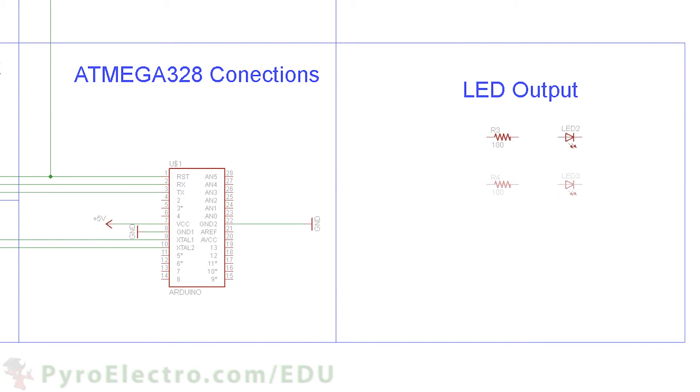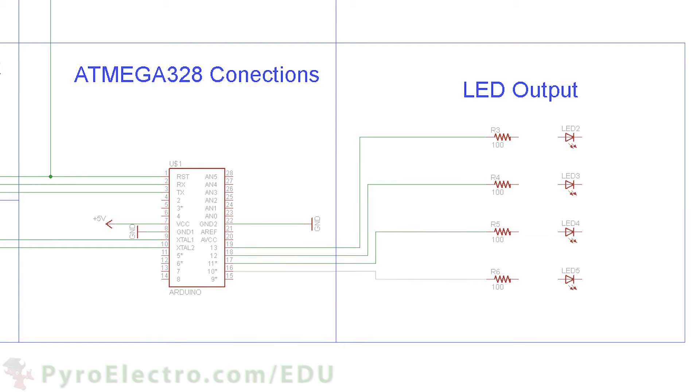Lastly, we will connect four LEDs and four current limiting resistors to digital pins 13, 12, 11, and 10 of the microcontroller.